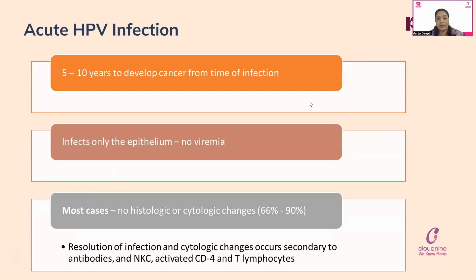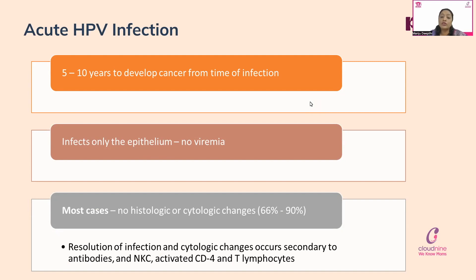Acute HPV infection takes about 5 to 10 years to develop into cancer from the time of infection. The virus infects only the epithelium — there is no viremia, meaning the virus is not spread all over the body; it is localized to the vaginal and cervical epithelium. In most cases, during this 5 to 10 year transition period, even histologic or cytologic tests may miss the infection about 66 to 90 percent of the time.